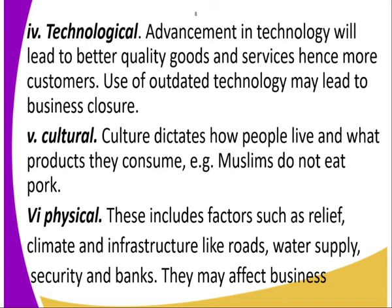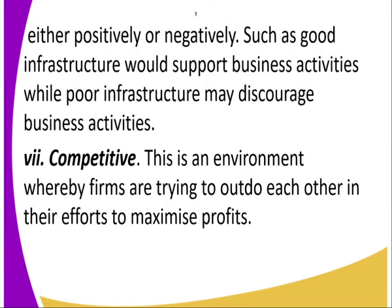Number 6 is the physical environment. This includes roads, water supply, security, bank services, climatic factors, and relief. Climate, infrastructure, and relief all affect business significantly. Number 7 is competitive — the environment where firms are trying to outdo each other in their effort to maximize profits.